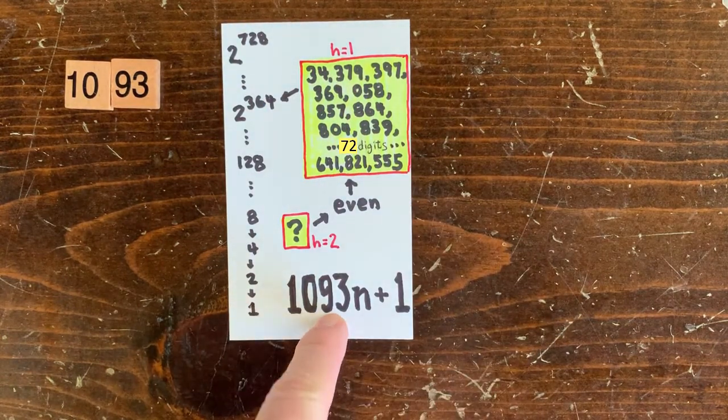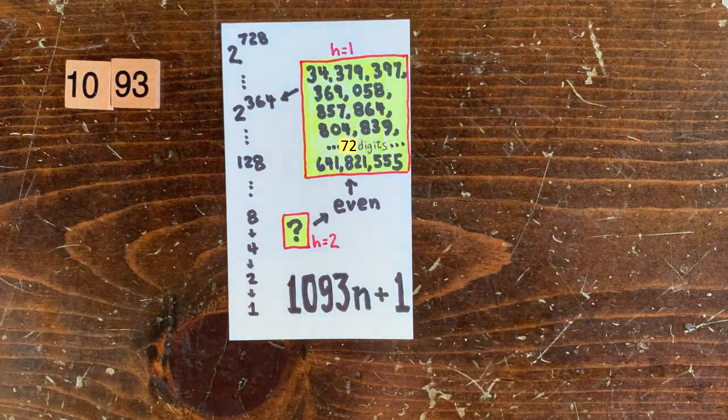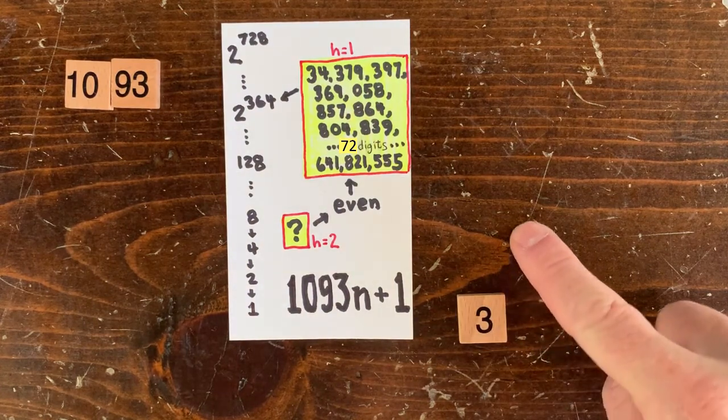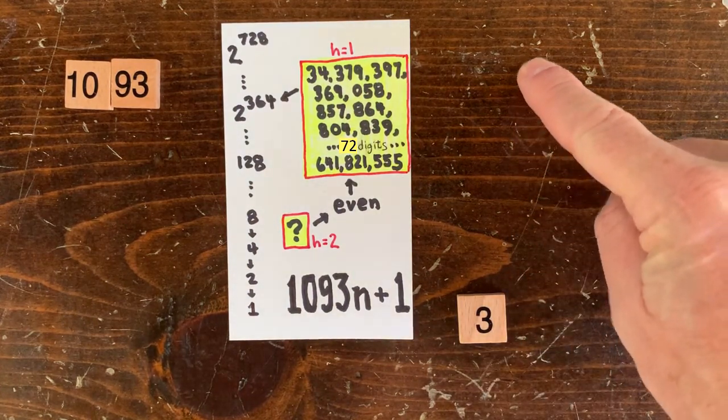So if we start with a number like 3, it goes to 3280, 3 million something, 3 billion something. We can be sure it'll never come back to 1.